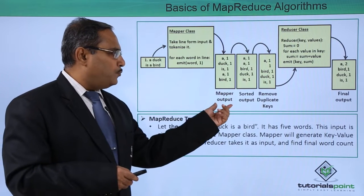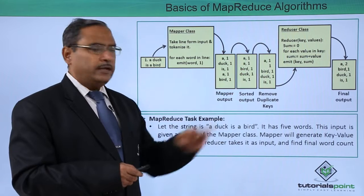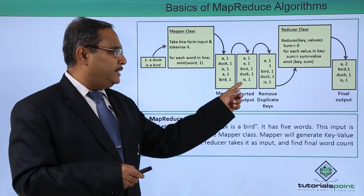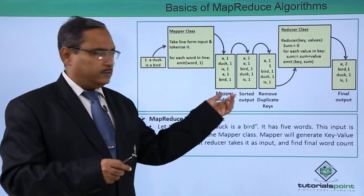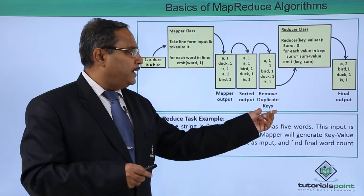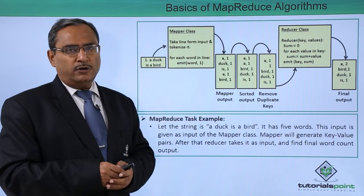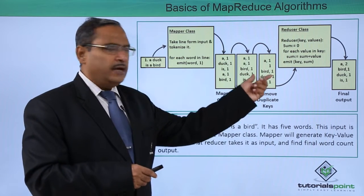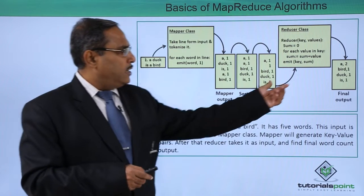Next, it goes for the sorted output. The keys are sorted in alphabetical order — A, A, B, D, I — giving the corresponding sorted output. Then duplicate keys are removed. Here, 'A' has occurred twice, so one instance of key A is consolidated, while the rest are unique, so no further elimination takes place.